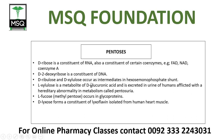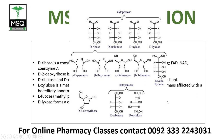L-xylulose is a metabolite of D-glucuronic acid and is excreted in the urine of humans afflicted with a hereditary abnormality in metabolism called pentosuria. To understand D and L structures, refer to the previous video. L-fucose is actually a methyl pentose and occurs in glycoprotein, which is a conjugated molecule — if you have two components forming one molecule, it is a conjugate molecule, as in glycoprotein where carbohydrate and protein are involved.